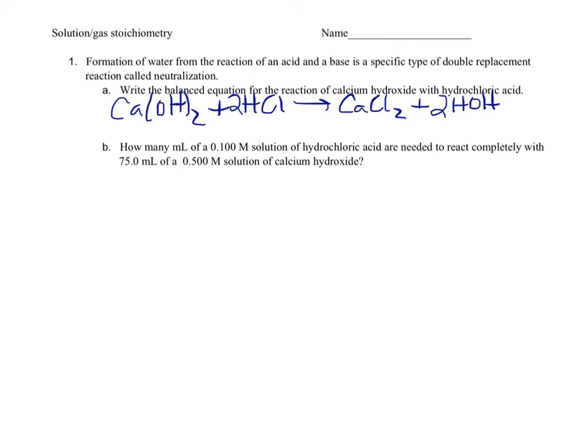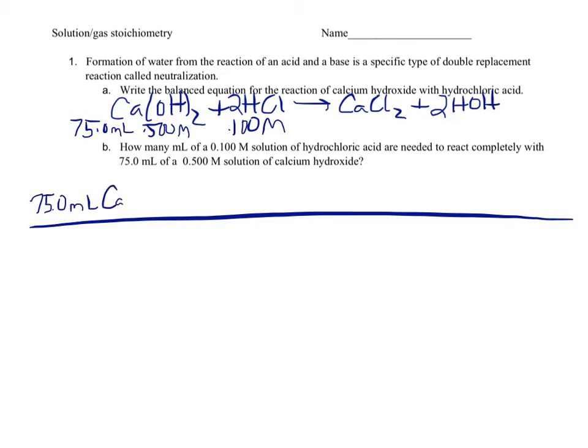Part B is going to be the actual stoichiometry part. You're going to have a lot of numbers and a lot of things to track. So one of the things that I model is taking that information and organizing it into the balanced equation. The first number I run into is 0.100 molar HCl, so I'm just going to write that underneath my HCl. And it wants to know how many milliliters of that are needed to react completely with 75 milliliters of a 0.500 molar solution of calcium hydroxide.